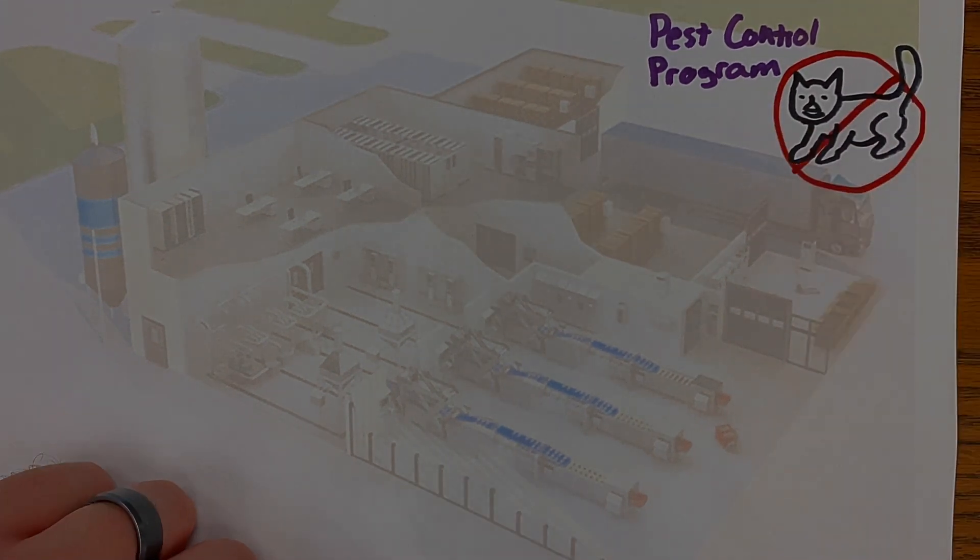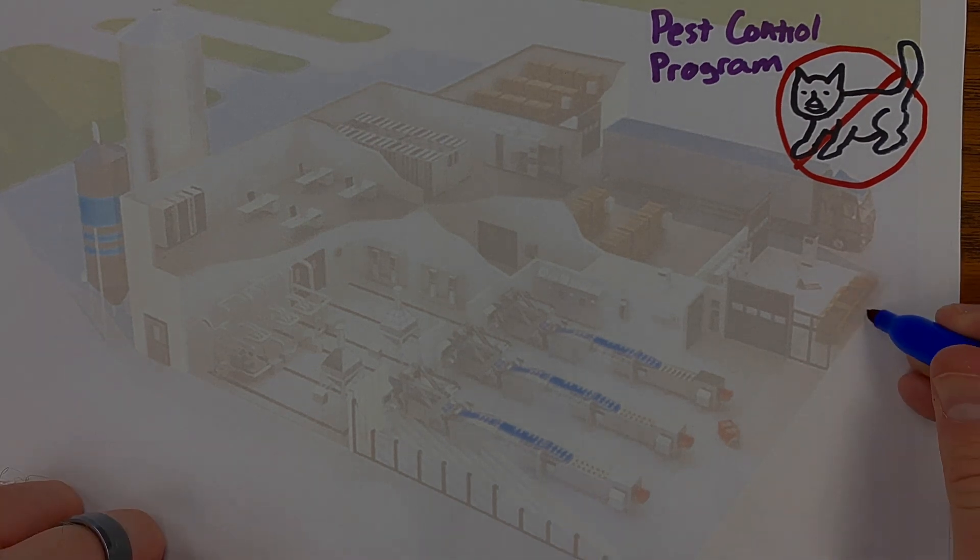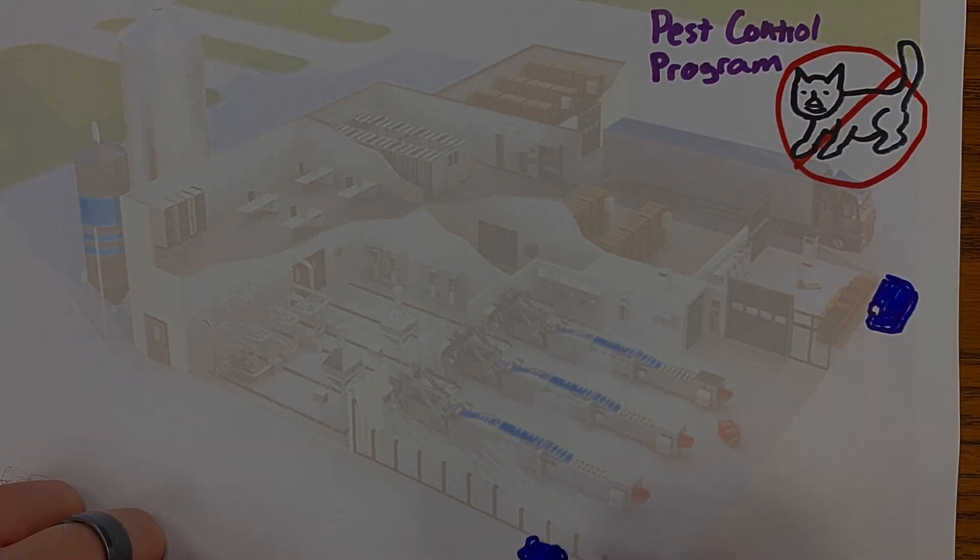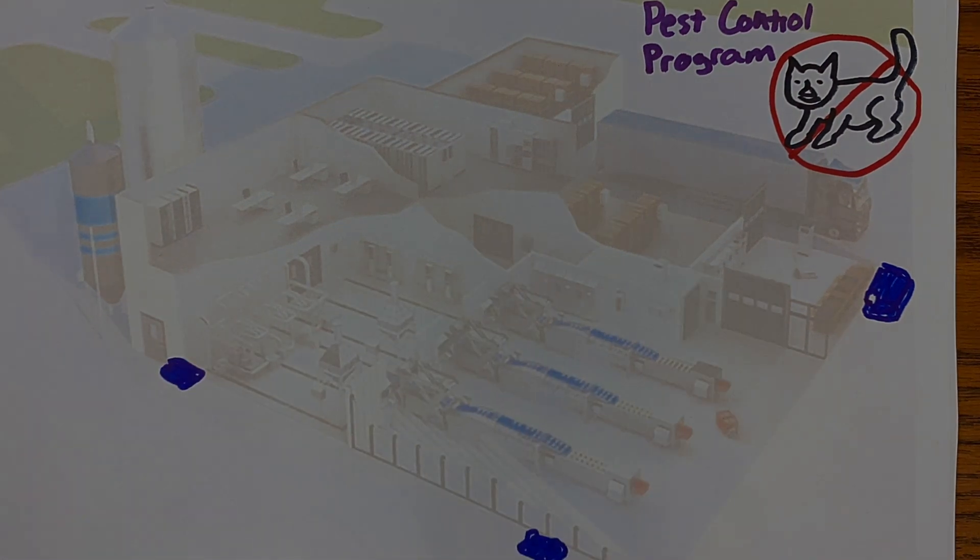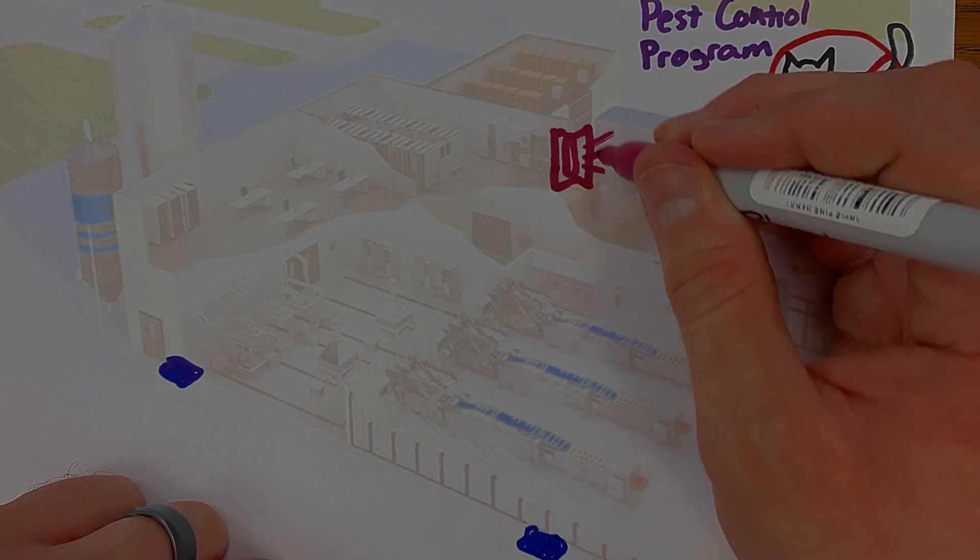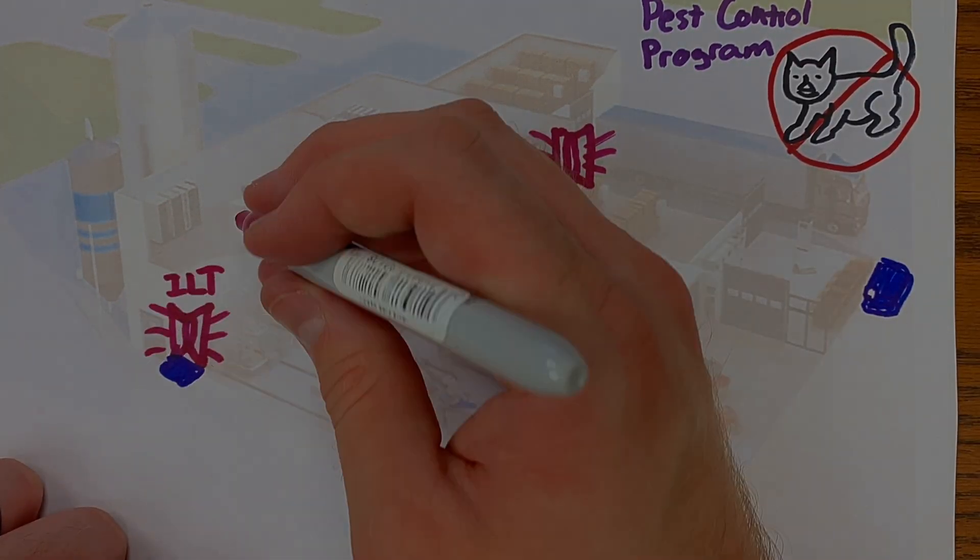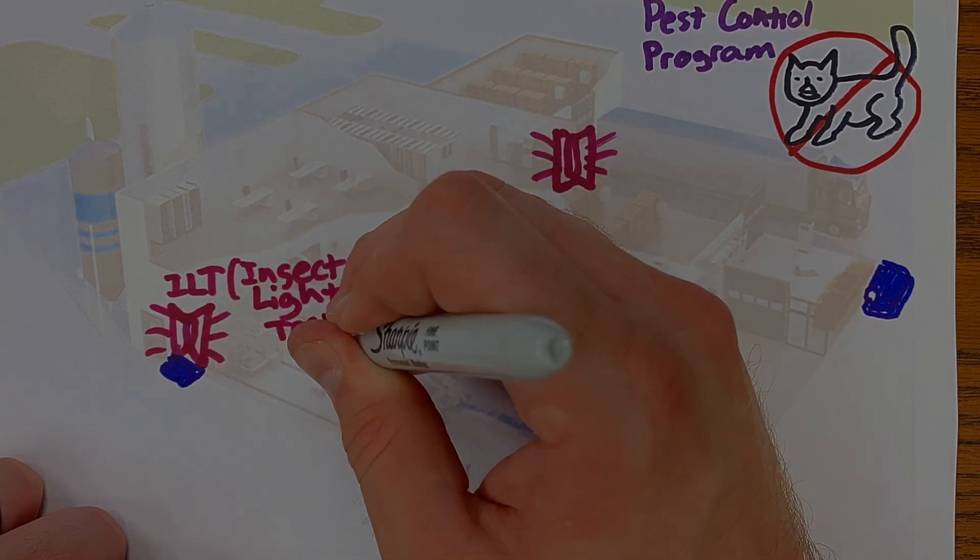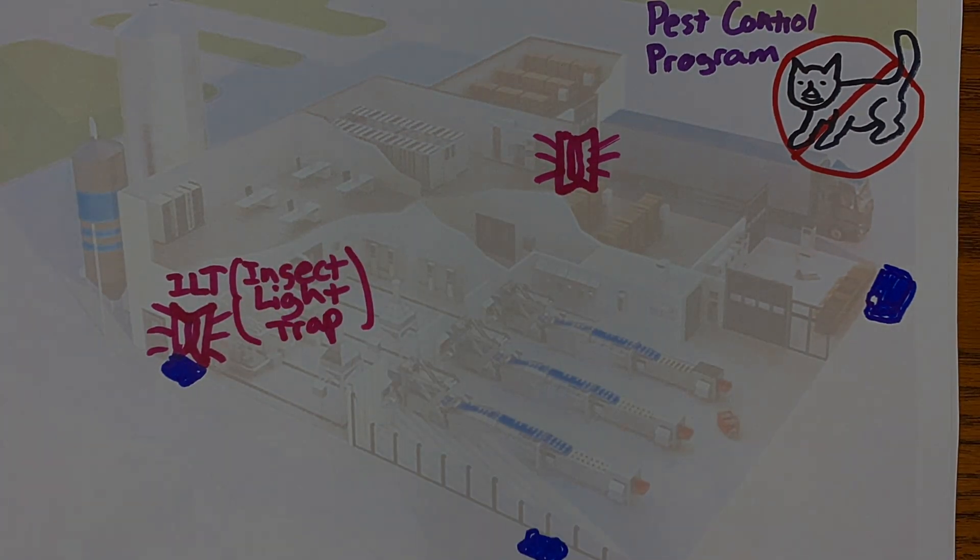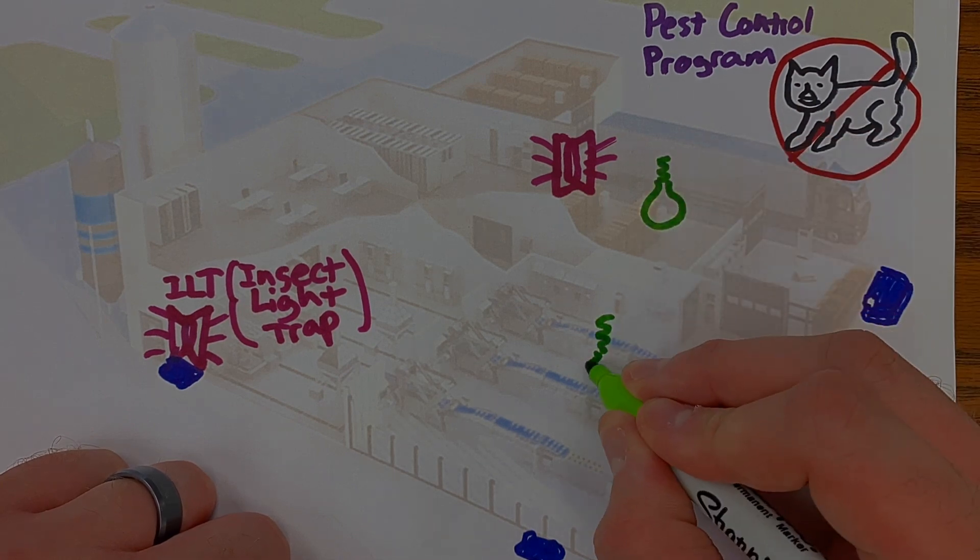Of course not. There should be a combination of rodent bait stations outside the facility and rodent traps inside the facility, plus ILTs or insect light traps for the bugs. These are just tools, not meant to be catch-alls. Avoid insectocutors as they will fry the bugs and spray those body parts everywhere. Lighting is crucial—pests love the dark and undisturbed places.